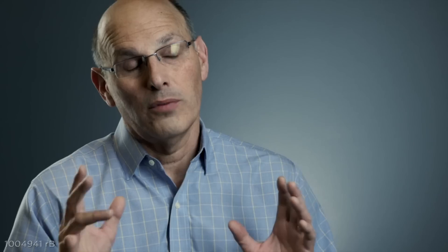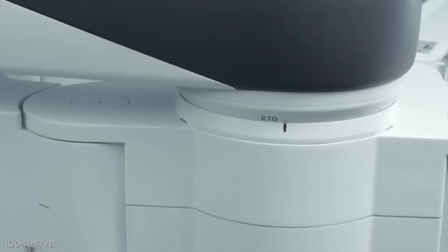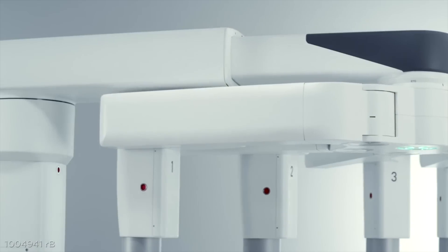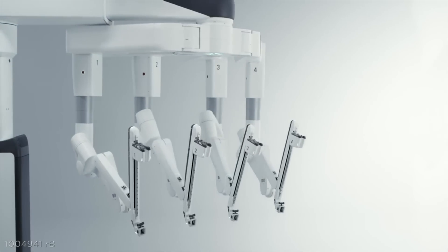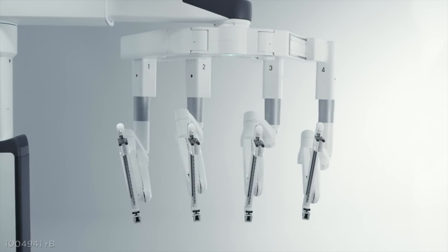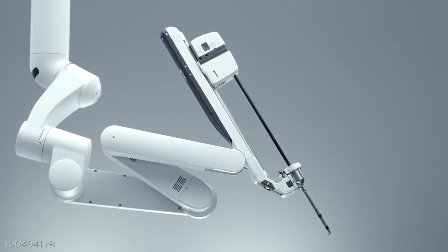The overhead boom allows the arms to rotate as a group, and this frees up valuable space inside the surgical field, allowing unobstructed access to the patient. This is all enabled by smaller, lighter arms with extended range of motion and improved reach inside the body.